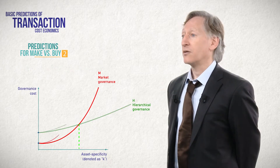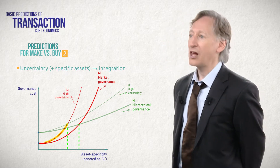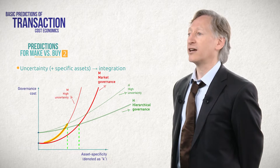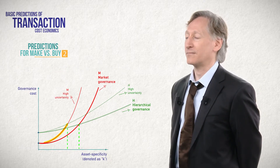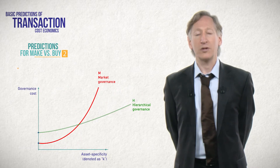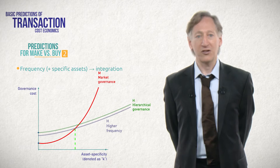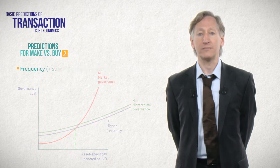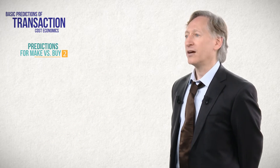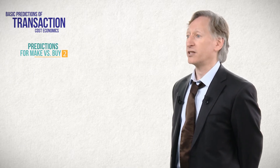Prediction three: the level of asset specificity at which optimal governance switches from market to hierarchy will be lower in situations of high environmental uncertainty than in low environmental uncertainty. Prediction four: the level of asset specificity at which optimal governance switches from market to hierarchy will be lower when the transaction occurs with higher frequency. Finally, as noted in video one, TCE scholars have proposed a fourth characteristic of transactions that affects governance: appropriability of knowledge.